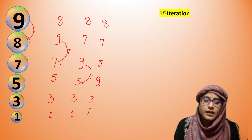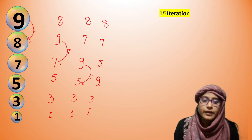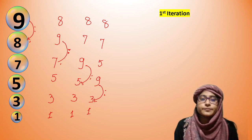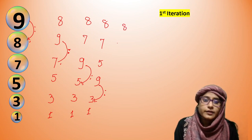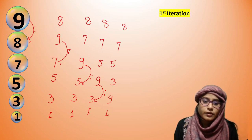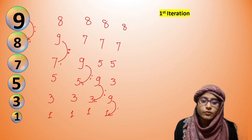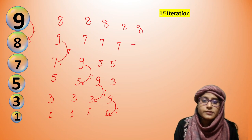Then 9 checks the next element. The pointer is here: 9 greater than 1? Yes — swap. So we get 8, 7, 5, 3, 1, 9. Now 9 has reached the last position. We look at the pointer: 9 is now fixed at the end, sorted in its correct position.